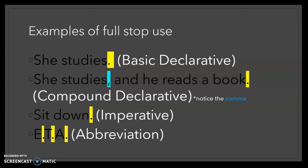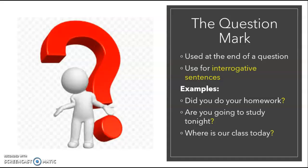So for some examples of full stop use, we've got a basic declarative sentence: she studies. And he reads a book, a compound declarative. So you'll notice the comma in there as well, that's another punctuation mark that we'll do another day. It's also used in imperatives like sit down, and in abbreviations. You can see the full stop has been highlighted in yellow in all those things.